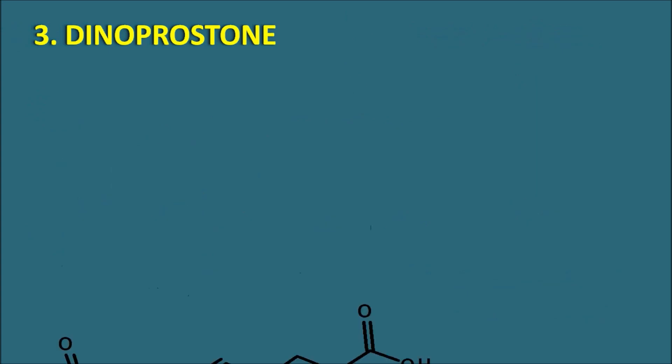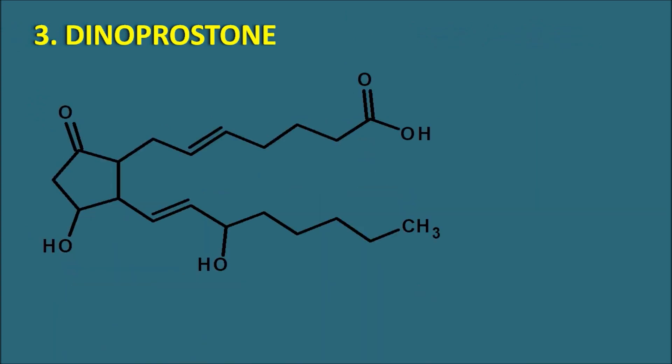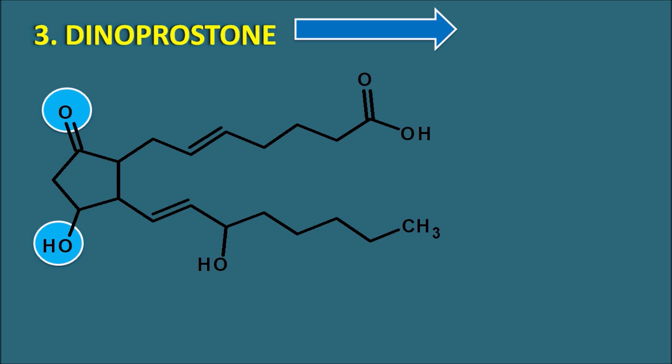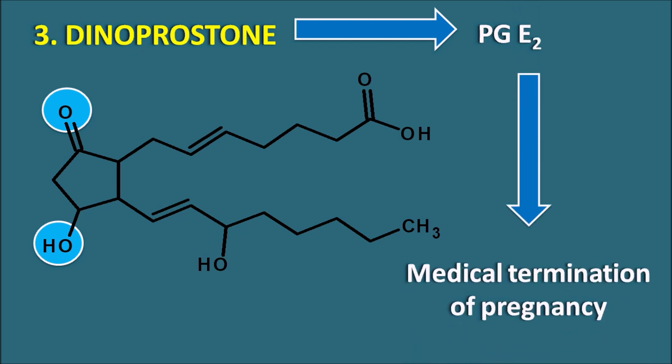The third drug is dinoprostone. Dinoprostone has a structure with the keto group at the 9th position and OH group at the 11th position. Importantly, it has a free carboxylic acid at the terminal, so dinoprostone is directly prostaglandin E2 with a free carboxylic acid. This drug also increases uterine contractions and can be used in the medical termination of pregnancy.